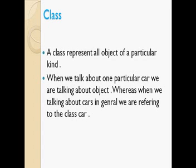A class represents all objects of a particular kind. When we talk about a particular car, we are talking about an object. Whenever we talk about cars in general, we refer to the class 'car'. For example, one red car is an object with a state of red and its particular behavior. But if you have 10 cars with different colors and different behaviors, those 10 cars all belong to the same class - class Car. A class is essentially the name given to a group of similar objects.